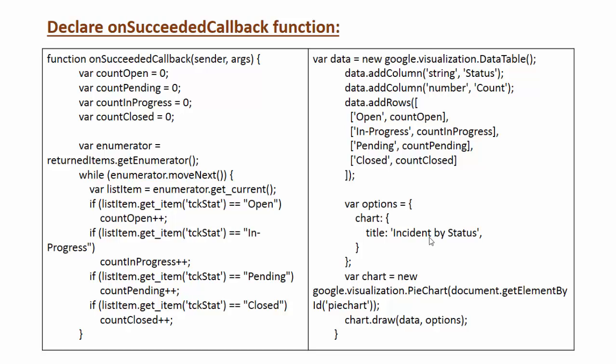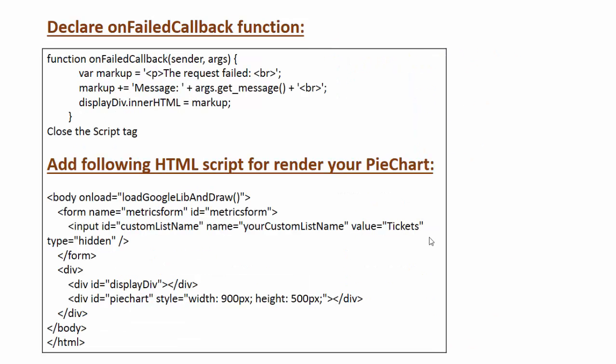I create a chart variable set to new google.visualization.PieChart, get the element ID from my HTML code, and draw the chart on that element. If the callback is not succeeded, the onFailed callback is called and information is set in the messages. On body load I call the loadGoogleLibraryAndDraw function. In the HTML I have a hidden input tag with ID 'customListName' and its value set to 'Tickets' — this is the name of my list. After that there is a display div where the pie chart will be bound.